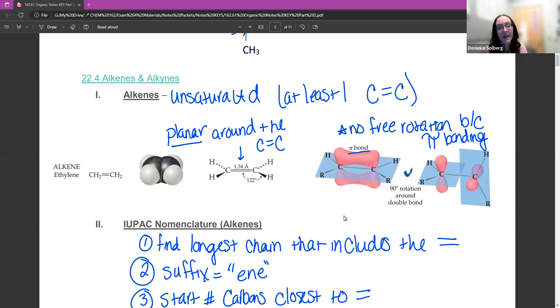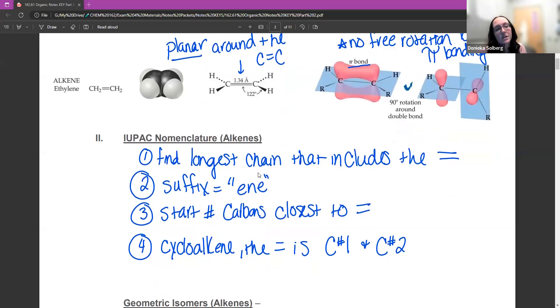We have to indicate if they have different groups, if there's cis or trans. Naming rules are very simple. First, find the longest chain that includes the double bond. The suffix is going to be -ene instead of -ane. You're going to start numbering your carbons closest to the double bond instead of the lowest numbers on the substituents. If it's the same on both sides, pick the side that has the most substituents. For a cycloalkene, the double bond is between carbons one and two, so all the other rules apply.